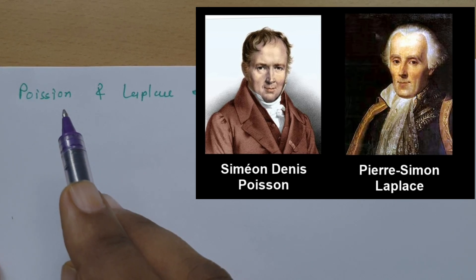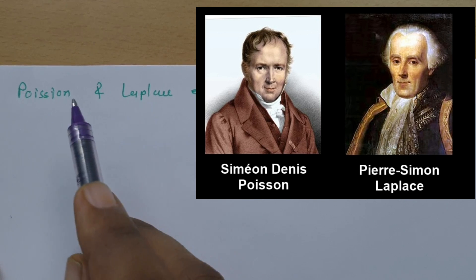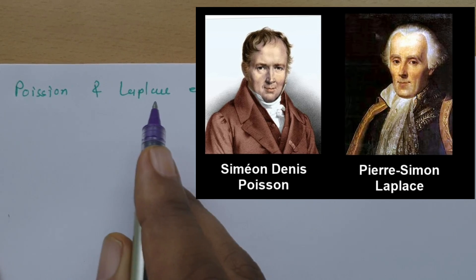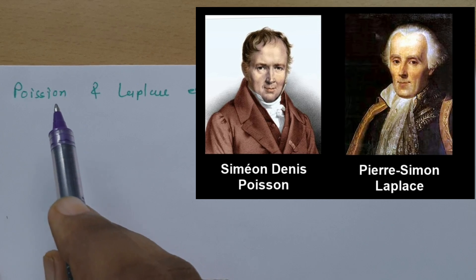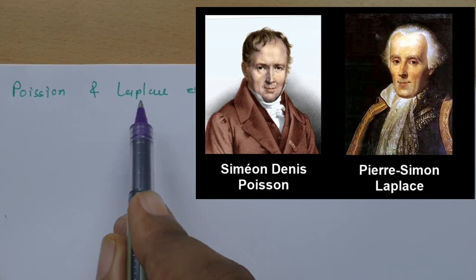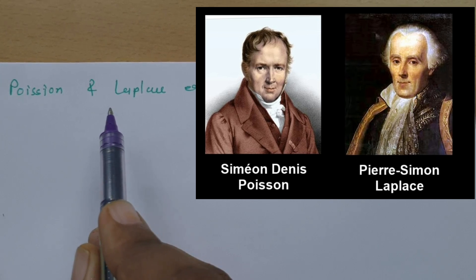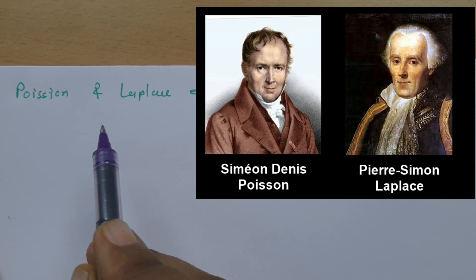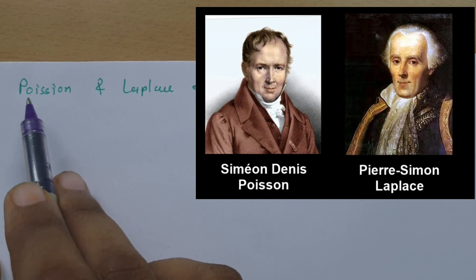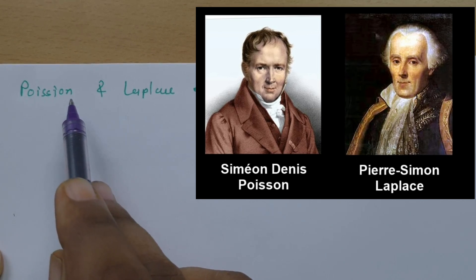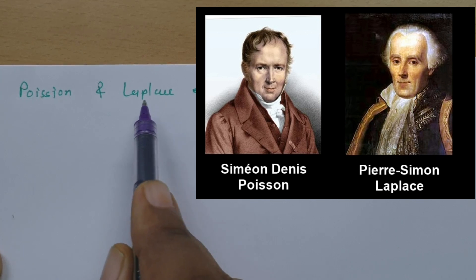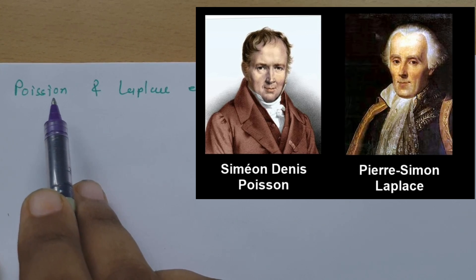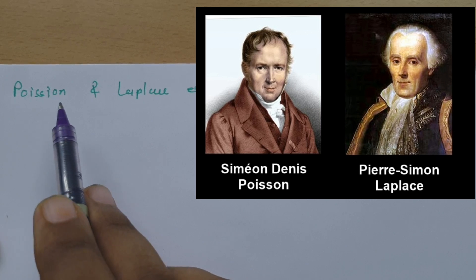After that, I will explain the significance of these two equations and the physical understanding we can use in applications. Let us derive Poisson's and Laplace equations. These two scientists — Poisson, full name Simeon Dennis Poisson, and Laplace, full name Pierre Simon Laplace — have done excellent work in electromagnetics, leading to an understanding that is even useful for Maxwell's equations.